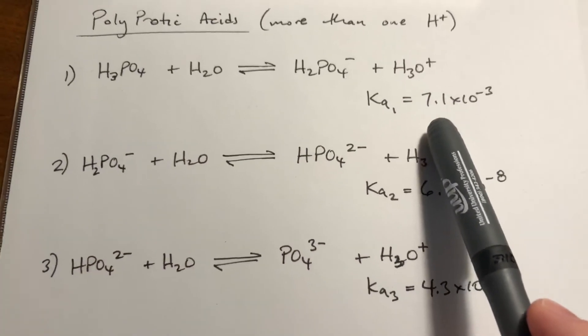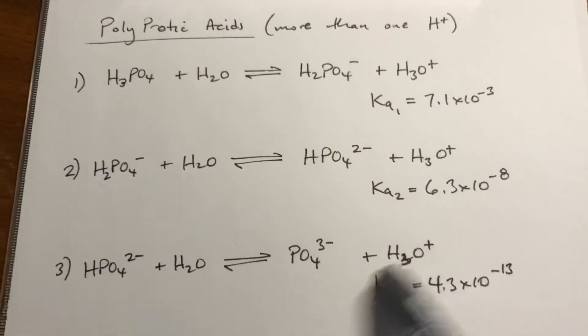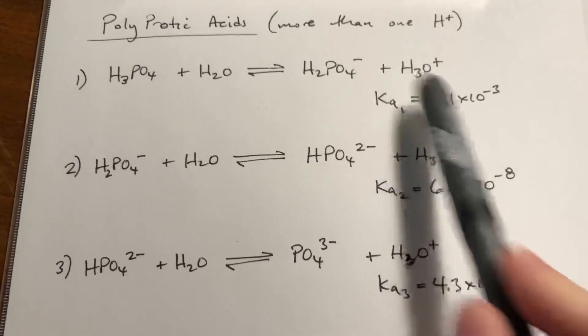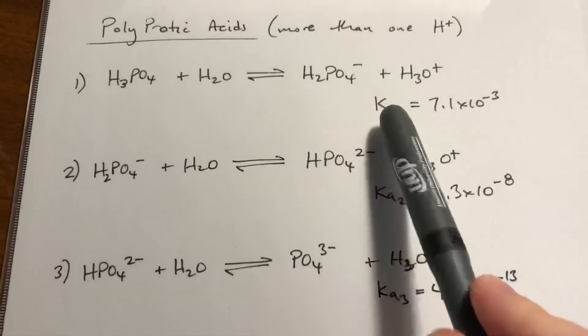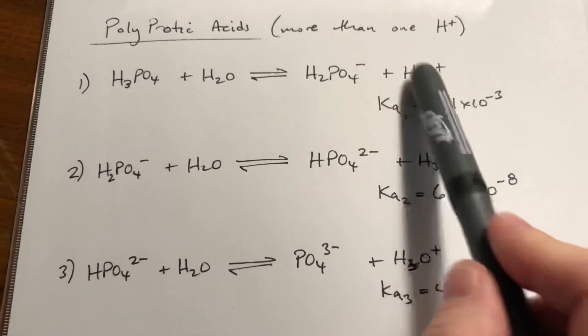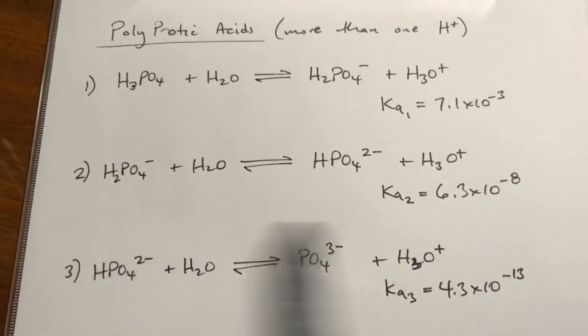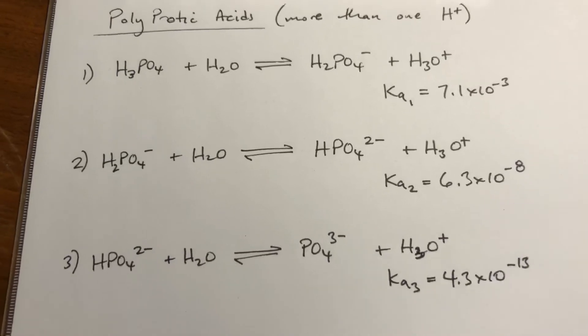If you add a base to this, a base will pull this out of solution. Like if you're doing a titration, you add a strong base, it's going to remove this, or this, or this, and it's going to pull all the reactions to the right, even though their Ka values may get progressively terrible.